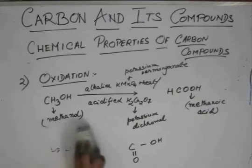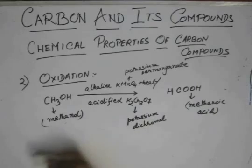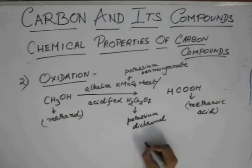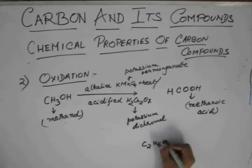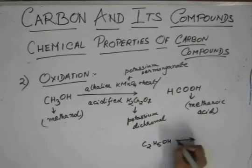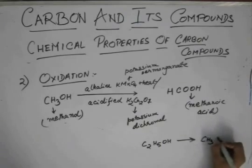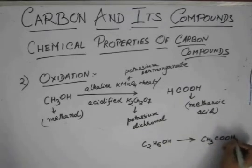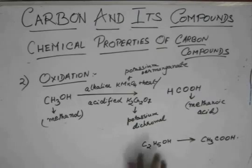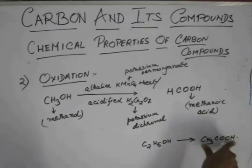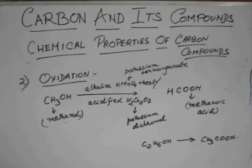So, if you have something like C2H5OH, and if you add your alkaline KMnO4 or acidic K2Cr2O7, it will basically become CH3COOH. Because the number of carbons should remain same, and this alcohol changes to an acid.